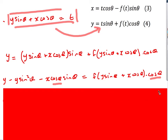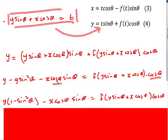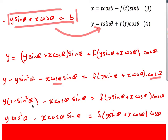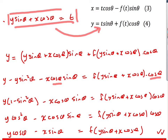The trick is to recognise that 1 − sin²(θ) = cos²(θ). So I get y·cos²(θ) − x·cos(θ)·sin(θ) = f(…)·cos(θ). Dividing everything by cos(θ) — valid as long as cos(θ) ≠ 0 — gives the general form: y·cos(θ) − x·sin(θ) = f(y·sin(θ) + x·cos(θ)). This is the general equation for rotating any curve by theta radians about the origin.